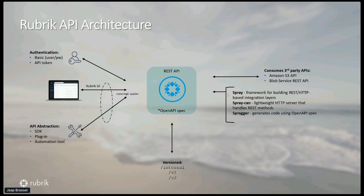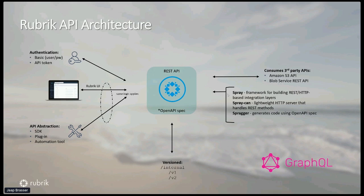Our challenge is that we version our different API endpoints under internal, v1, and v2. Whenever we go from internal to v1, or v1 to v2, the original endpoints also stay in place. We also have a GraphQL endpoint, but we won't be covering that in this session since I only have 20 minutes.